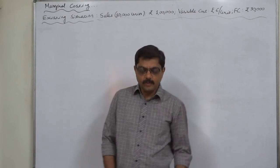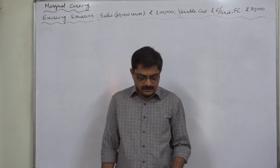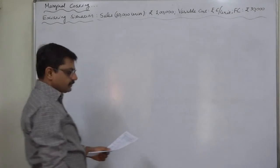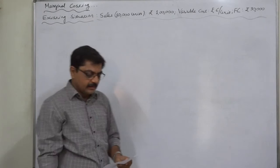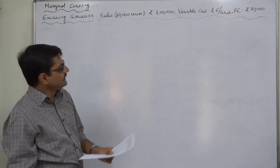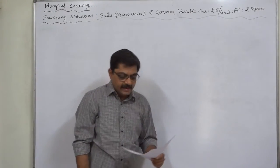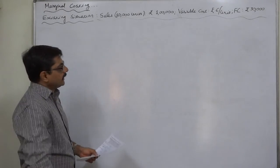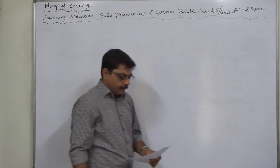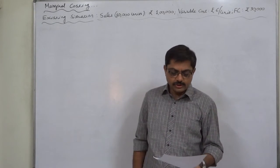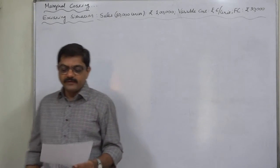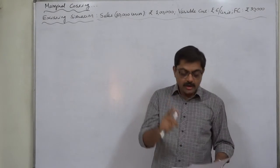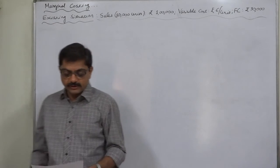Let us take the problem. The problem is: present sales 10,000 units and rupees 1,00,000 (1 lakh). Variable cost rupees 6 per unit and fixed cost rupees 30,000. Calculate PV ratio (profit volume ratio), BEP, margin of safety, and sales to earn profit of rupees 5,000.